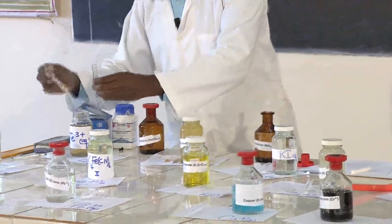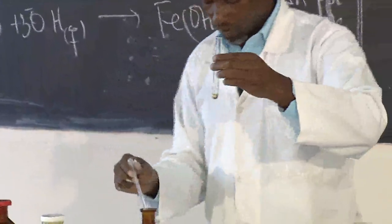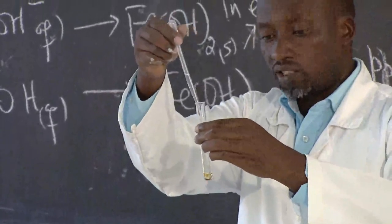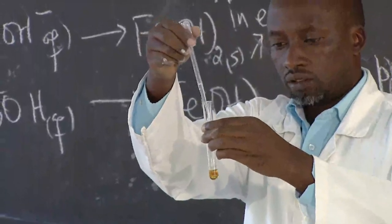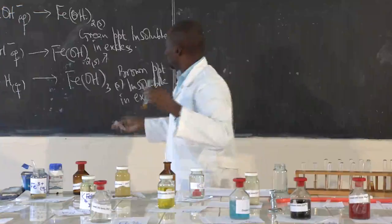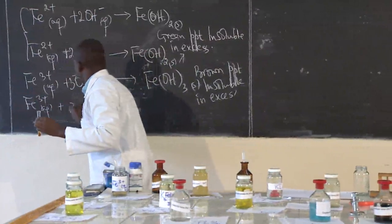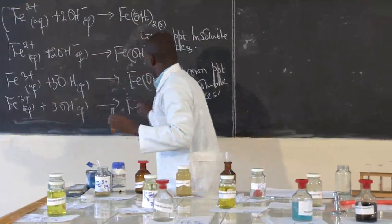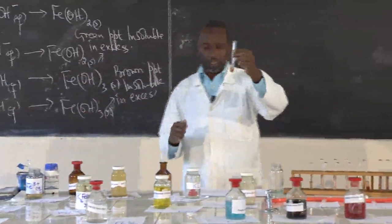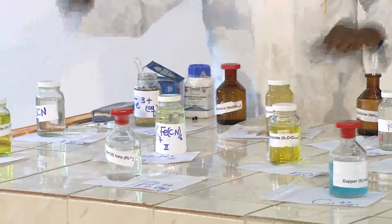Now we look at the effect with ammonia solution on iron 3. We start with iron 3, add some few drops, then add some few drops of ammonia solution drop-wise. That gives the same precipitate — still we are having iron 3 reacting with the hydroxide ions, giving iron 3 hydroxide as a solid precipitate as well.